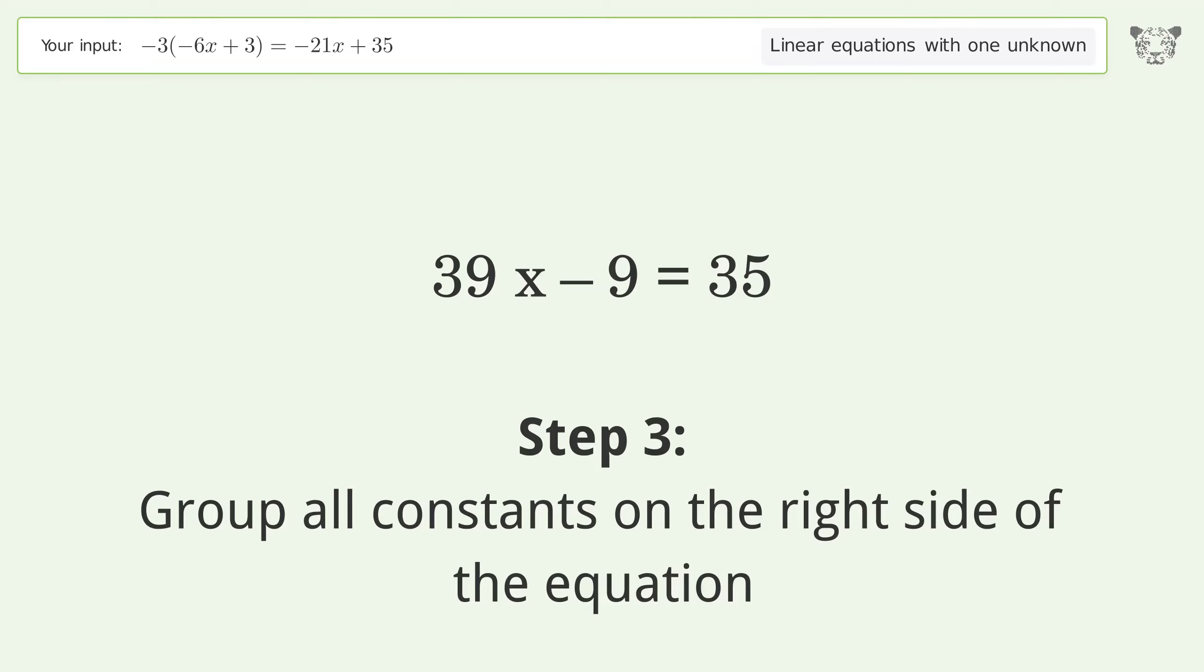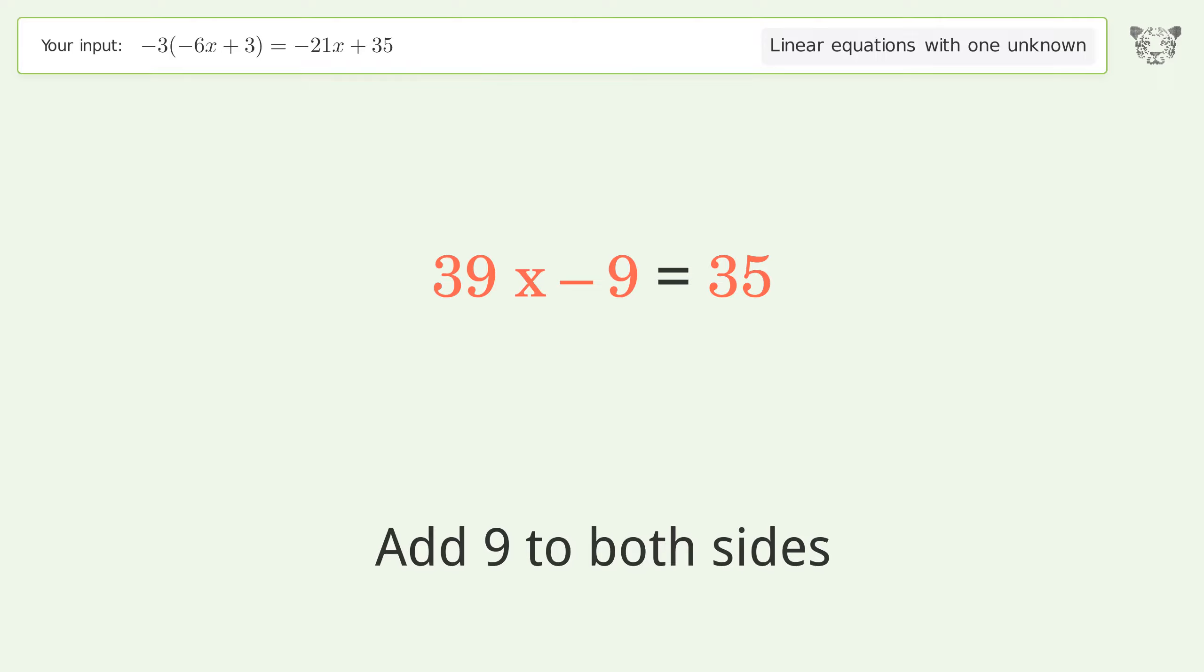Group all constants on the right side of the equation. Add 9 to both sides. Simplify the arithmetic.